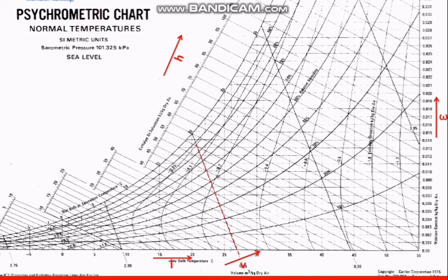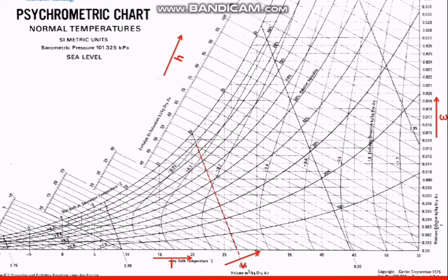For future reference, this line here is the saturation line — this is the line at which the relative humidity is 100%. On the y-axis, we have the moisture content, which is the humidity ratio.